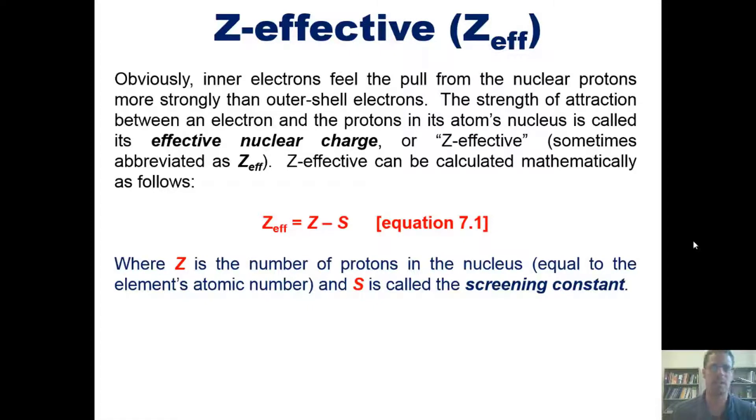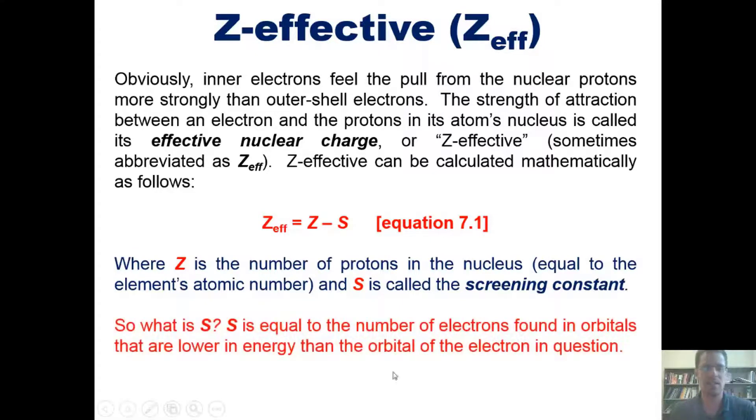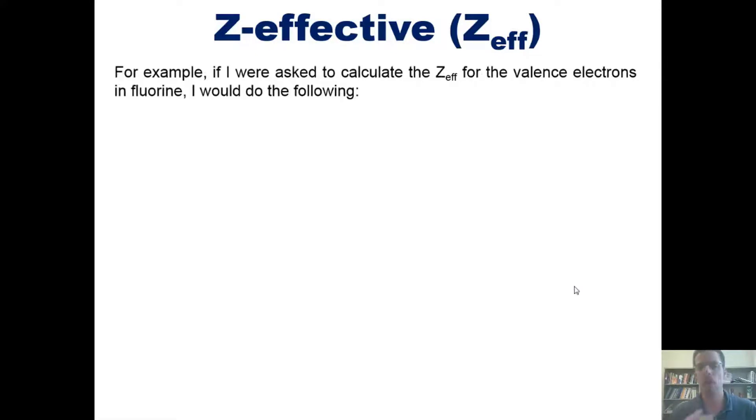So what in the world is a screening constant? Well, a screening constant is equal to the number of electrons found in orbitals that are lower in energy than the orbital of the electron in question. For example, if I were asked to calculate the Z-effective for the valence electrons, which are the outermost electrons in fluorine, I would do the following.